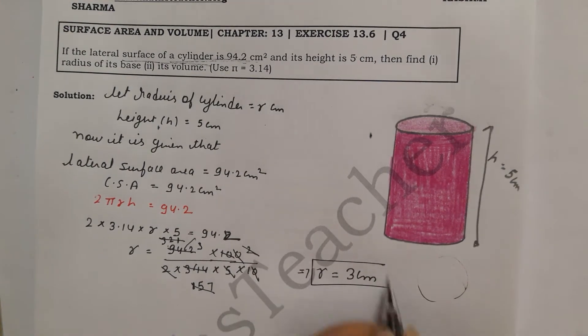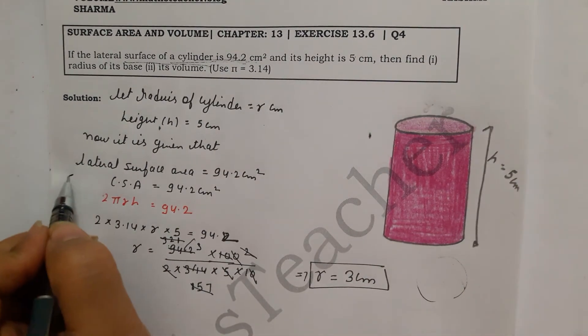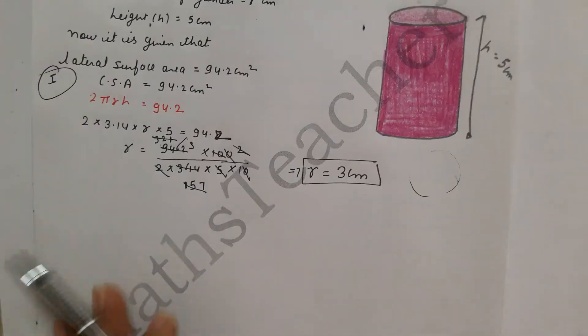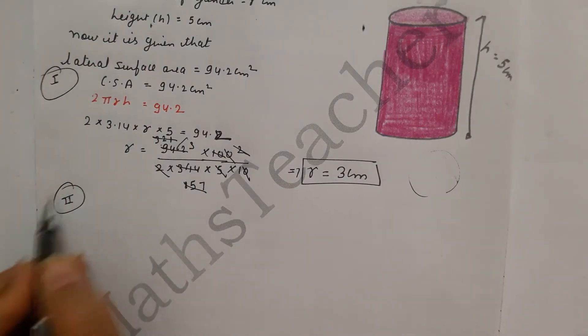3 cm. So first part we have to solve, we have to find radius. Now what you have to find here? Find its volume. So let's put the formula.